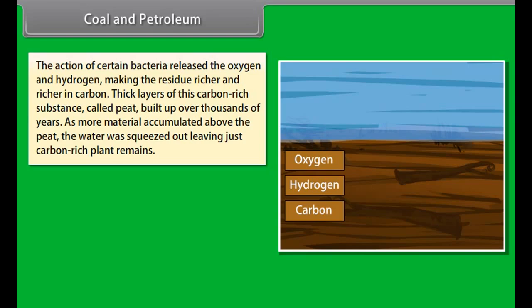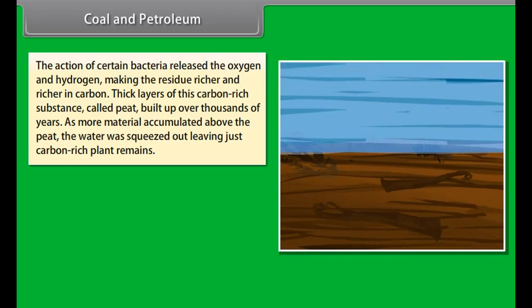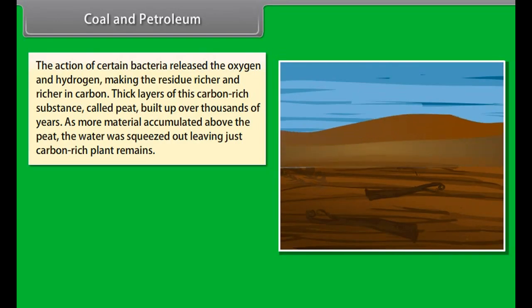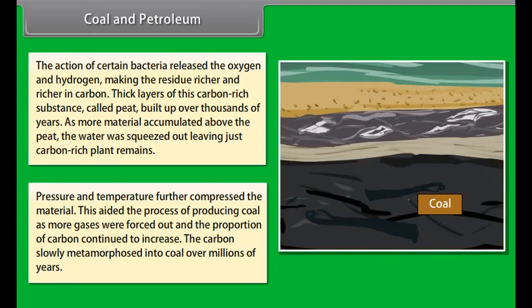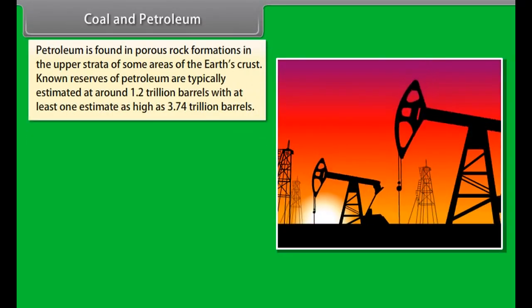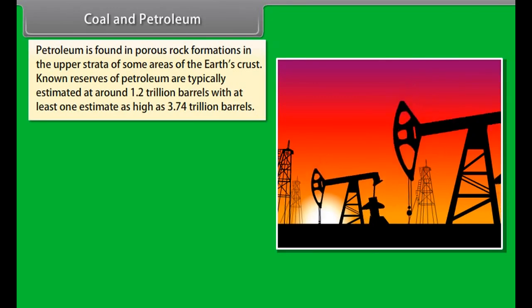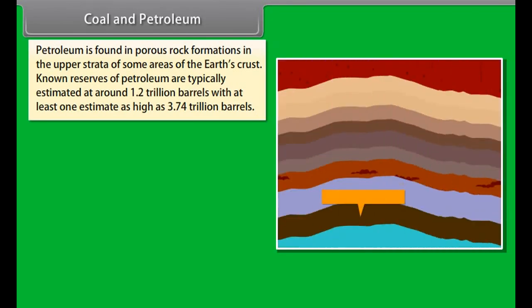Rainwater harvesting essentially means collecting rainwater on the roofs of buildings and storing it underground for later use. Not only does this recharging arrest groundwater depletion, it also raises the declining water table and can help augment water supply. Rainwater harvesting and artificial recharging are becoming very important issues. It is essential to stop the decline in groundwater levels, arrest seawater ingress, prevent seawater from moving landward and conserve surface water runoff during the rainy season.